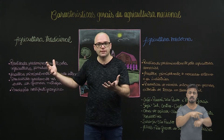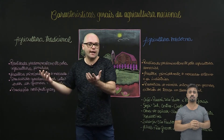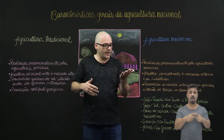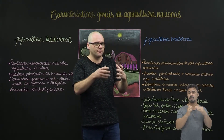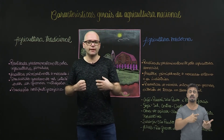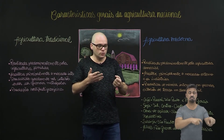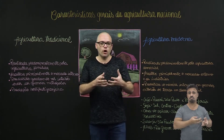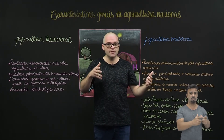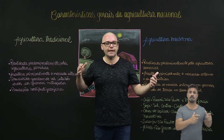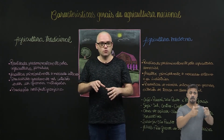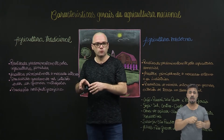Essas pequenas propriedades rurais acabam sendo a maior parte das propriedades rurais no país. Só que elas juntas não correspondem à maior quantidade das terras utilizadas para a agropecuária. Porque as grandes empresas rurais, as indústrias que utilizam material da produção primária, acabam tendo a maior propriedade. Os grandes produtores rurais, a agricultura comercial, têm a menor quantidade de propriedades, mas a maior concentração dessas terras, e permanecem nessa constância de concentrar cada vez mais as terras. A menor parte das terras do Brasil é focada no abastecimento do mercado interno.